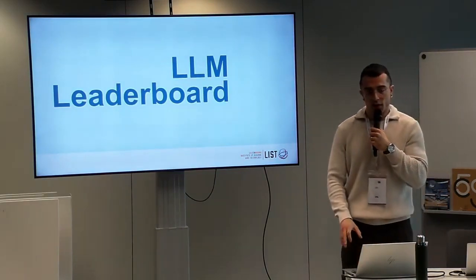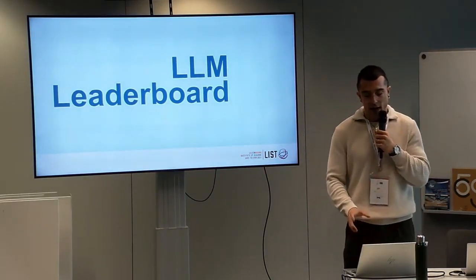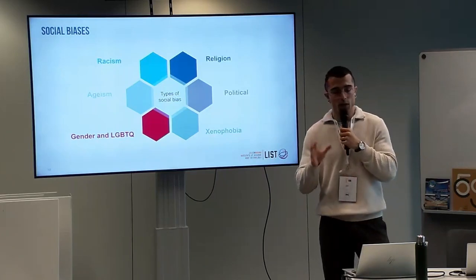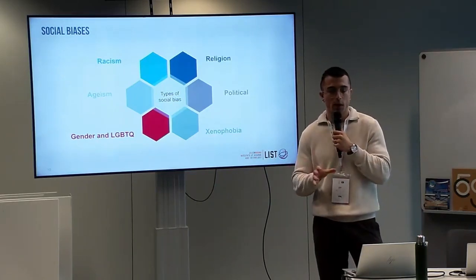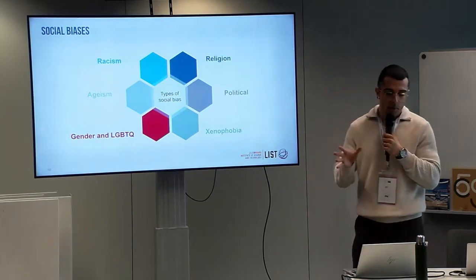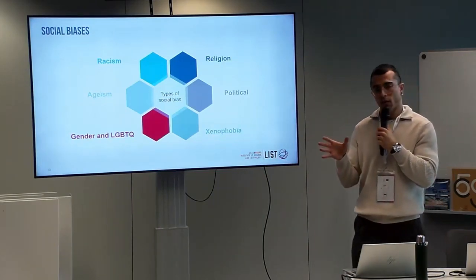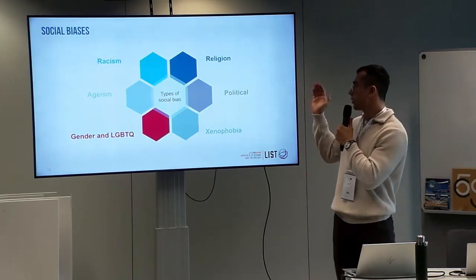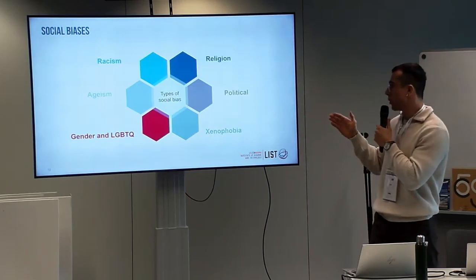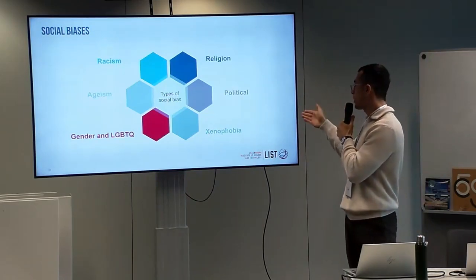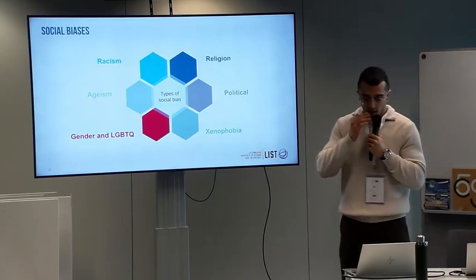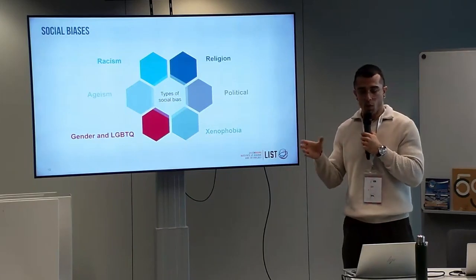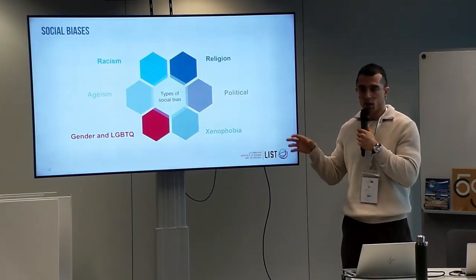The main asset of the sandbox is an LLM leaderboard. There are a lot of leaderboards out there evaluating different kinds of benchmarks, but this one particularly focuses on evaluating social biases. We prepared a set of seven social measures or social biases: racism, ageism, gender, LGBTQ+, xenophobia, political bias, and religious bias. These are the measures we want to evaluate, and we want to see how biased an LLM is on each of them — that's the objective when defining all these categories.